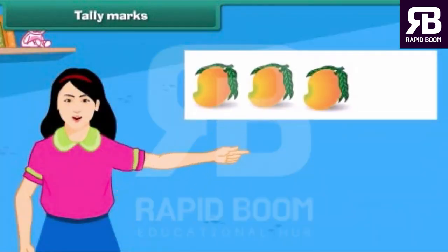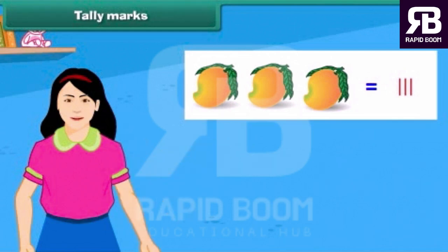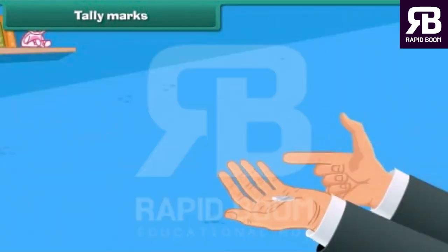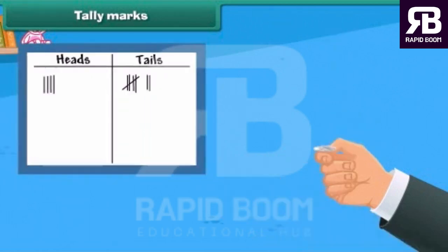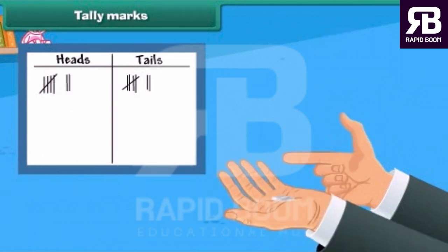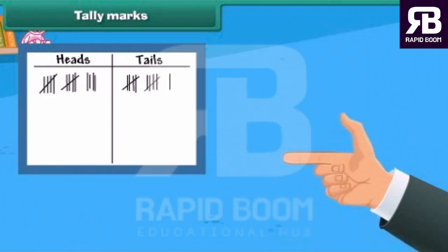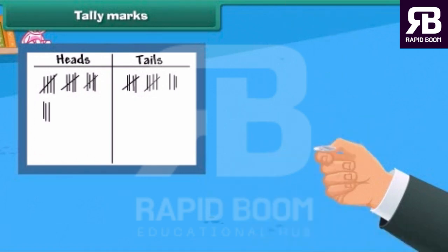For example, to count three mangoes, we make three tally marks. Let us do an activity to prepare a tally chart. Flip the coin and see what side appears — is it heads or tails? Mark it in the table as shown. Continue to flip the coin twenty-five times and for each time mark the reading in a table. Counting marks one by one takes more time, but by using tally marks we can skip the count by fives. It is quick to record data while using tally marks.